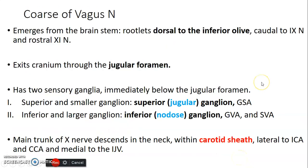So what is the course of the vagus nerve? It emerges from the brainstem, and the rootlets are usually dorsal to the inferior olive, and caudal to the glossopharyngeal nerve, and rostral to the accessory nerve. On the dorsal surface of the olive, from the top, you have cranial nerve 9 glossopharyngeal, followed by vagus, then the accessory nerve. So the vagal nucleus is caudal to glossopharyngeal and rostral to accessory. Then it will exit the cranium through the jugular foramen, just like the glossopharyngeal nerve.